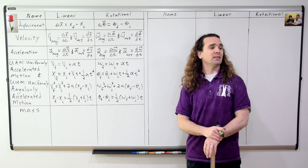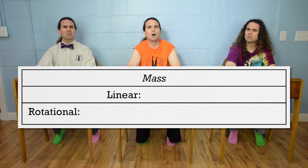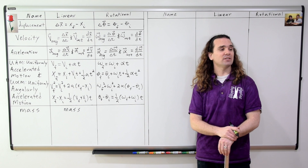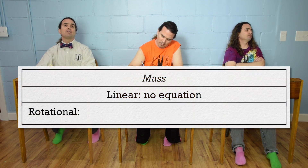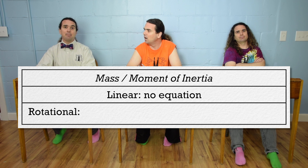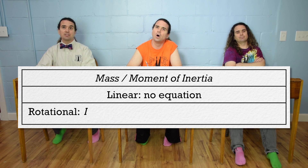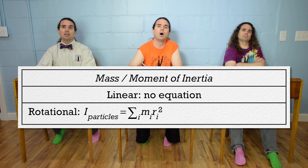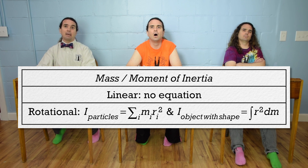Billy, what is the linear equation for mass? There is no linear equation for mass. Exactly. Now, Billy, what is the rotational equation for mass? Rotational mass is called moment of inertia. The symbol for moment of inertia is capital I, and there are two equations. The moment of inertia of a system of particles is the sum of the mass of each particle times r-squared, or the square of the distance each particle is from the axis of rotation, and the moment of inertia for a rigid object with shape is the integral of r-squared with respect to mass.